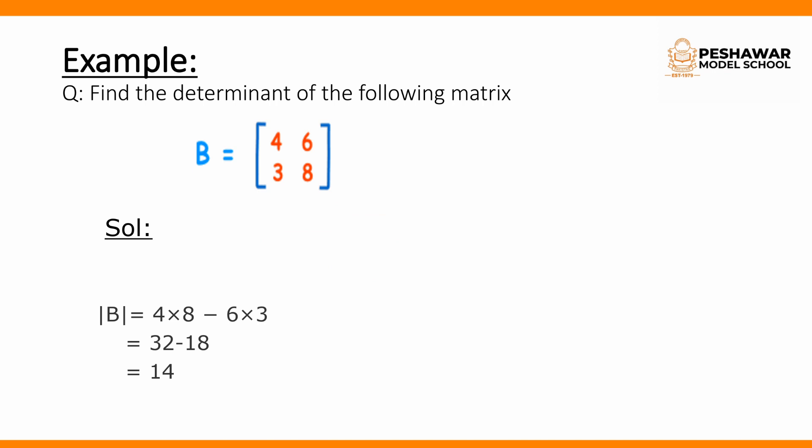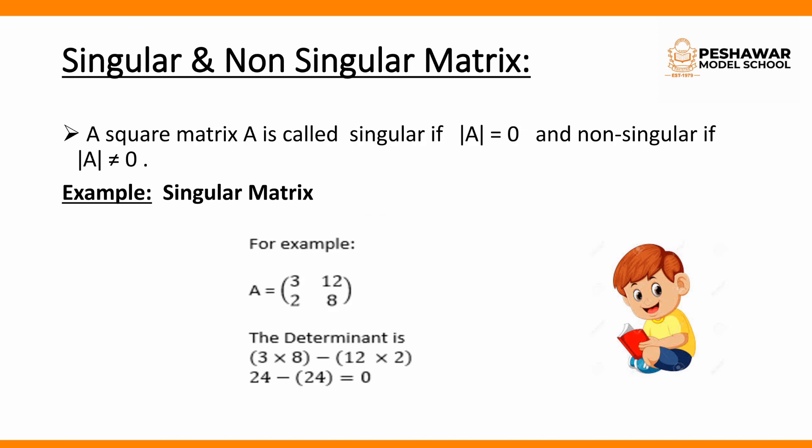Next we have singular and non-singular matrices. For a square matrix A, it is called singular if the determinant of A equals 0, and it is called non-singular if the determinant of A is not equal to 0.